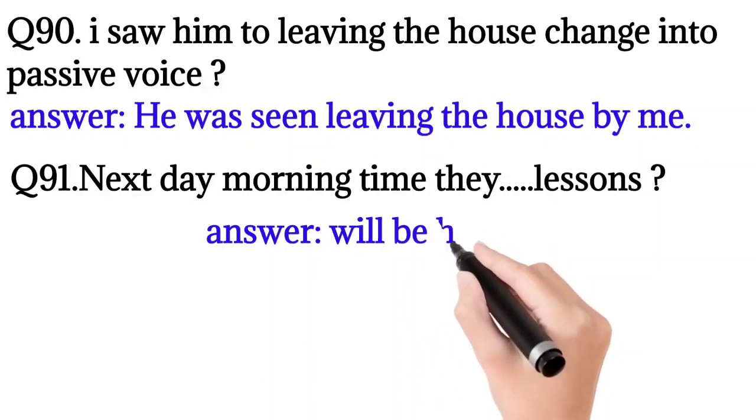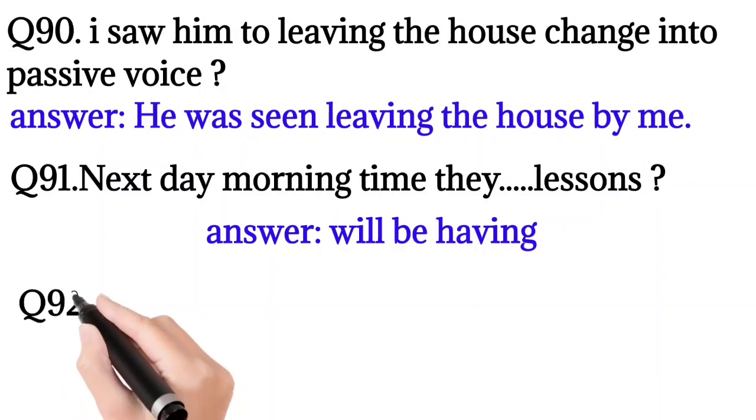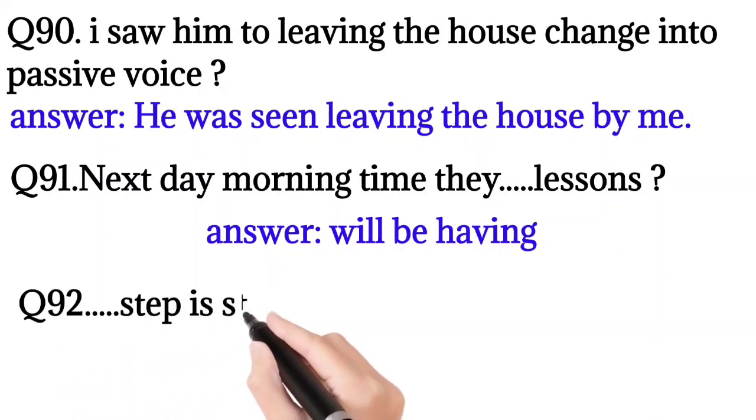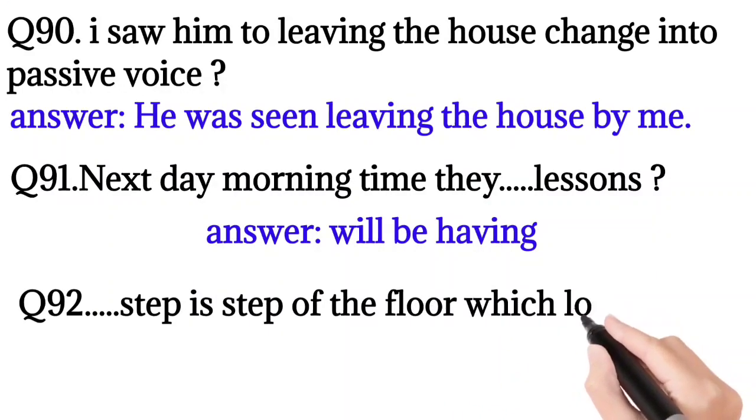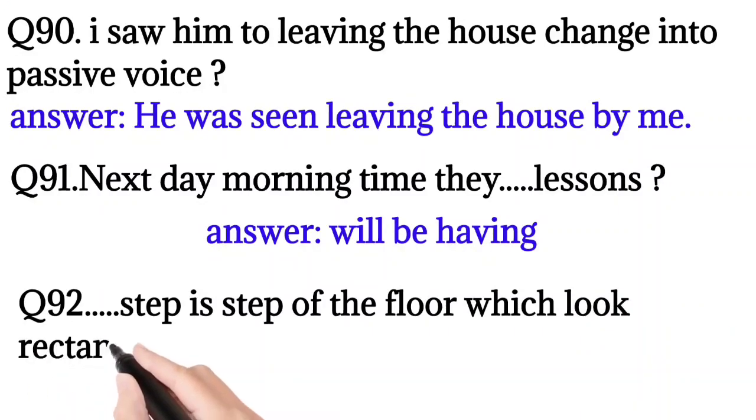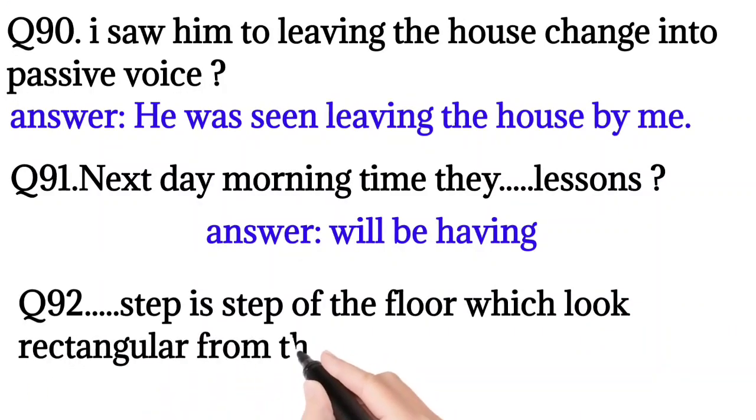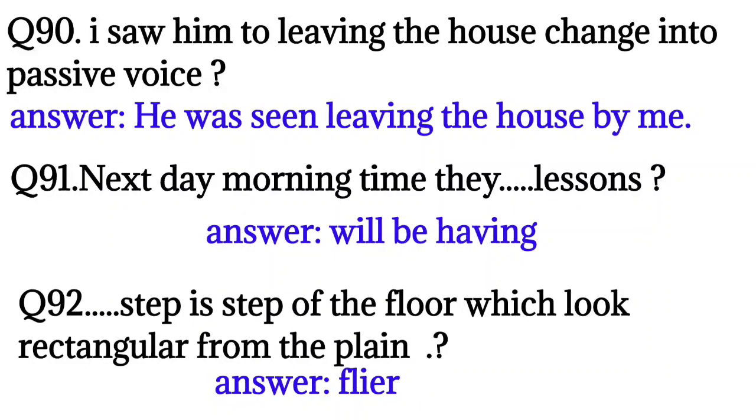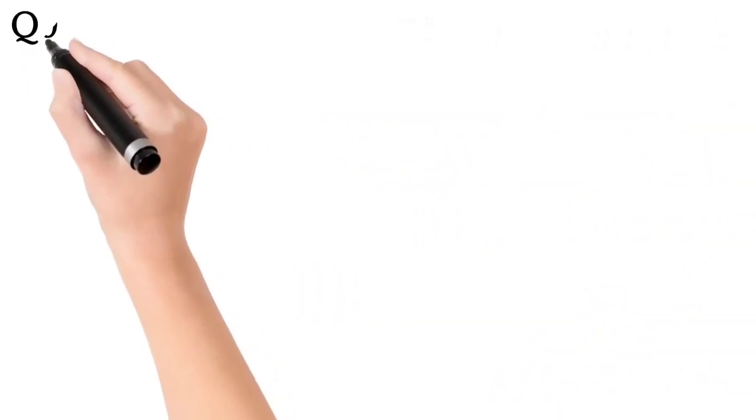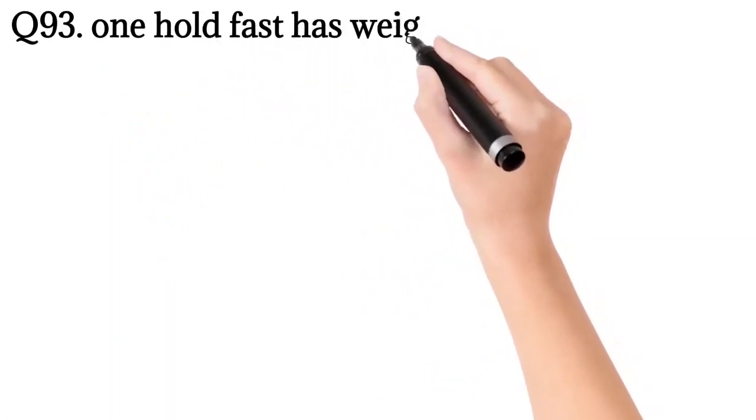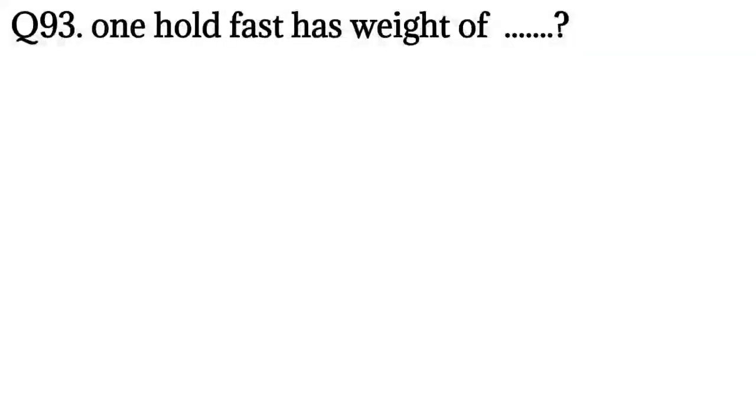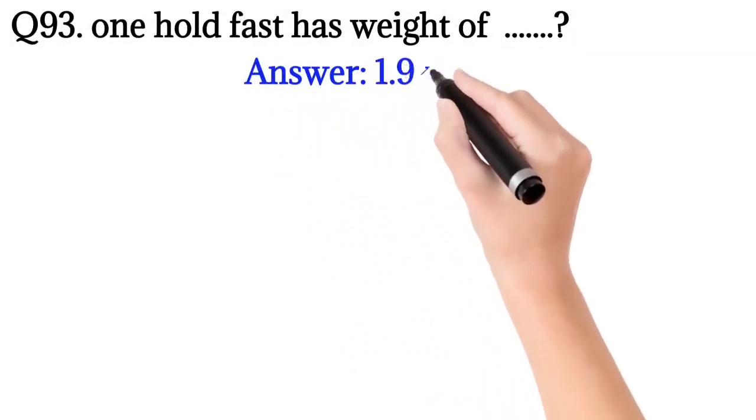Question number 92: Step by step of the floor which looks rectangular from the plane. Right answer: tread. Question number 93: One hold-fast has weight of? Right answer: 1.9 kg.